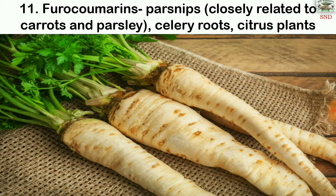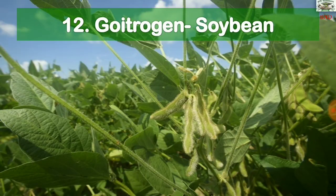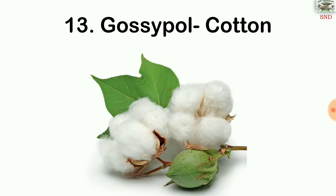Furocoumarins are in parsnips, which are closely related to carrots and parsley, as well as in celery roots and citrus plants. Goitrogen is in soybean. Gossypol is in cotton.